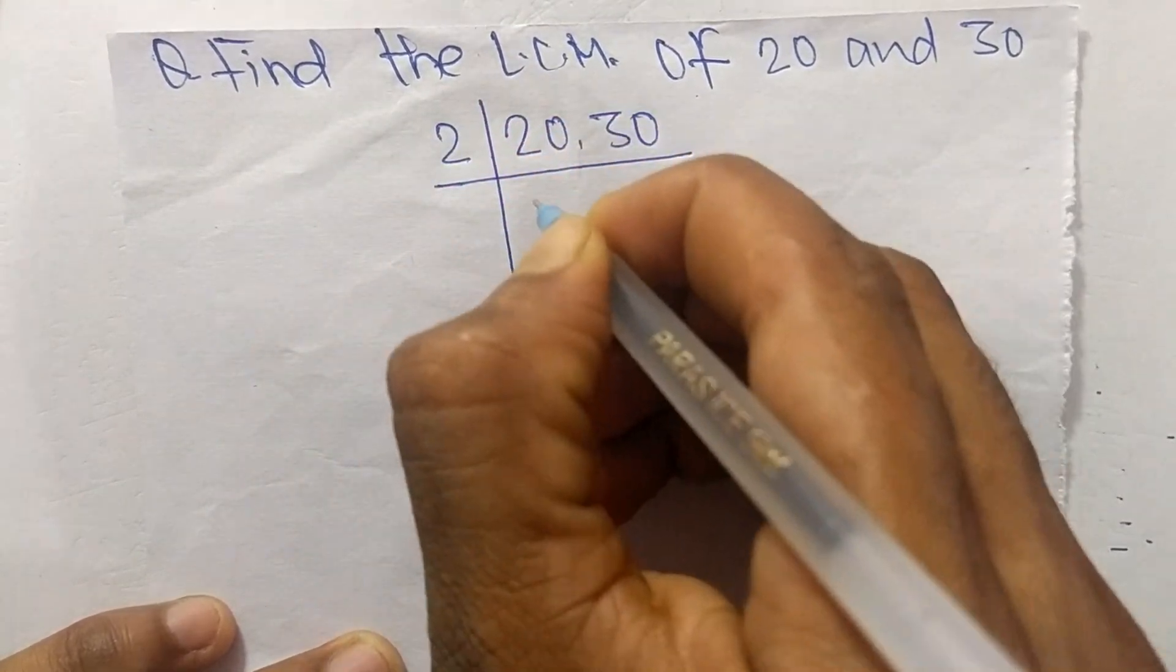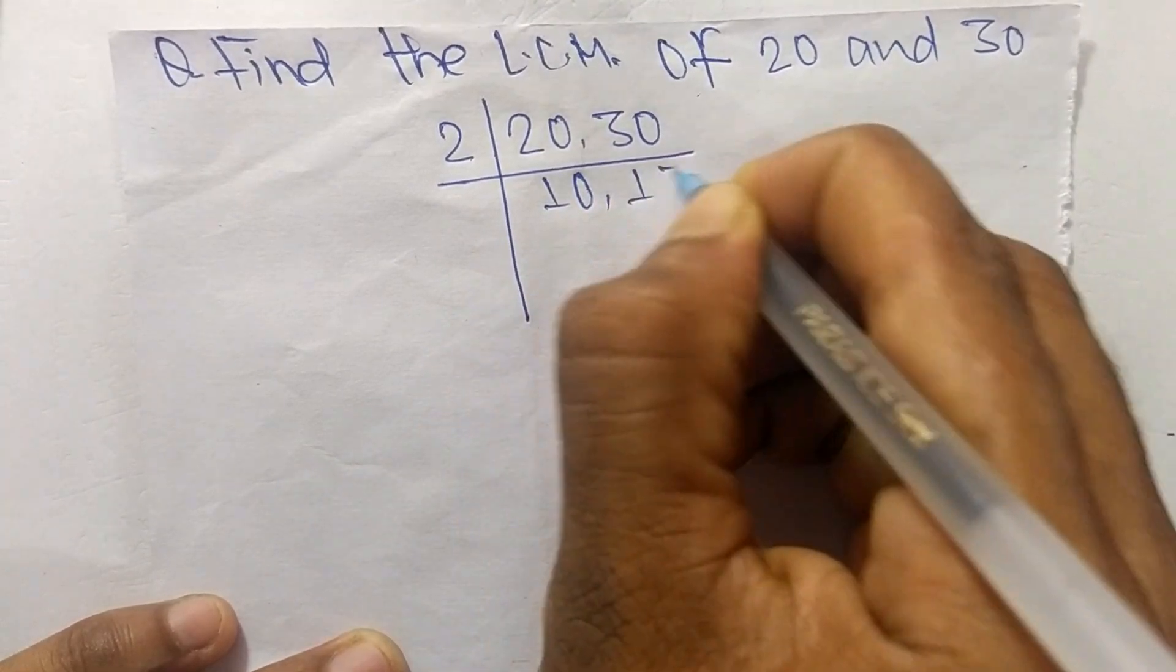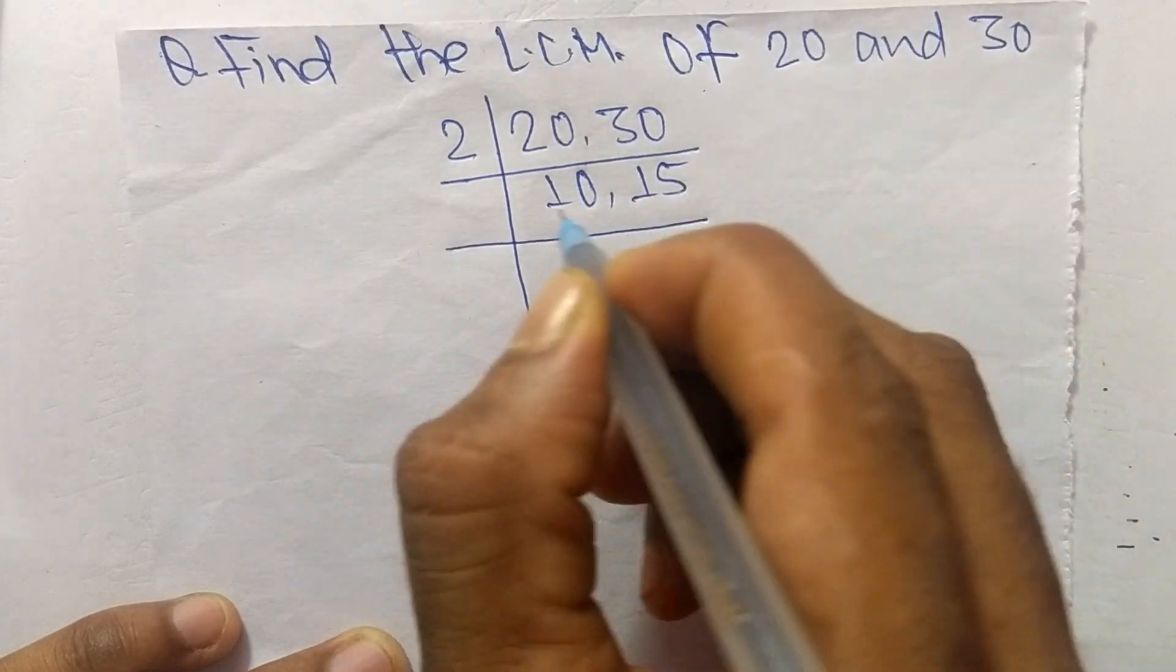The number is 2. So 2 times 10 means 20, and 2 times 15 means 30. Now 2